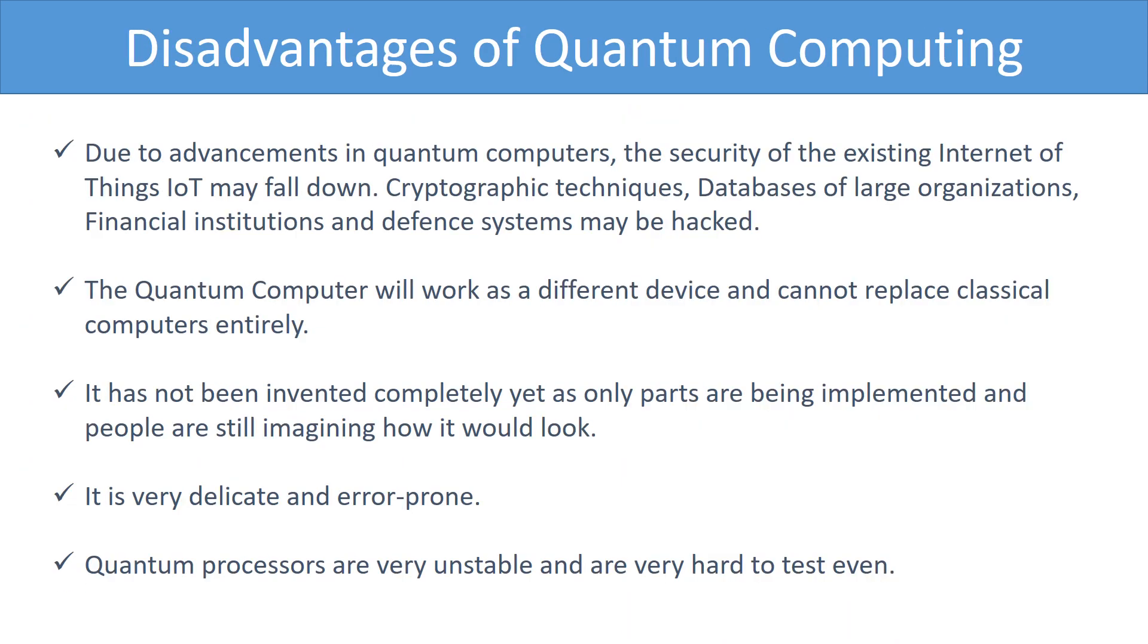We all agree with a lot of pros of quantum computing, but there must be some disadvantages of quantum computing. Right? Let's understand what are these. First, due to advancements in quantum computers, the security of the existing internet of things may fall down. Cryptographic techniques, databases of government and private large organizations, banks, and defense systems can be hacked. Considering these facts, quantum computers can be terrible for our future.